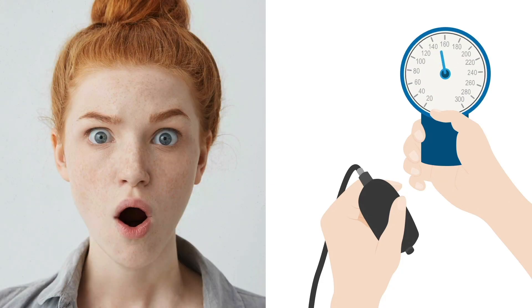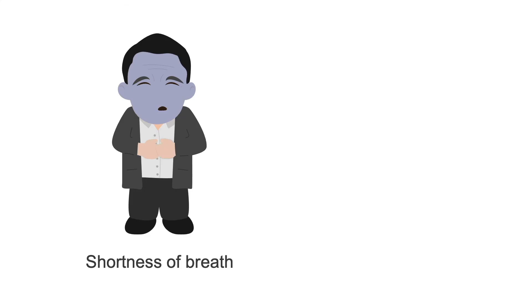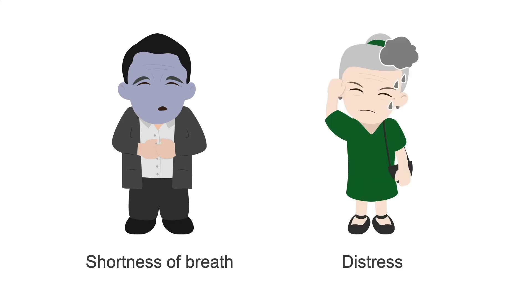The other method of measuring pulsus paradoxus involves asking the patient to hold their breath during inspiration and taking a systolic blood pressure measurement, then taking a separate measurement during expiration. This can be tricky if the patient is short of breath or in distress, so I prefer the first method.